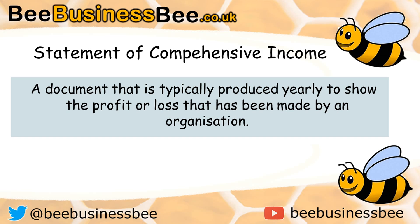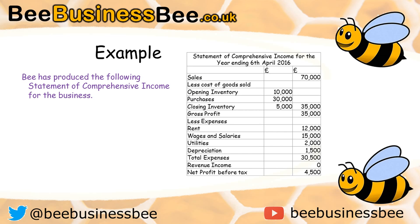It's also called the income statement and it's also called a profit and loss account. This is a document that's typically produced yearly to show the profit and loss that an organisation has made. Here is an example of an income statement. This is for B's business, and as you can see, set out on your right hand side, all of the information that's been produced at the end of the financial year for the 6th of April 2016.